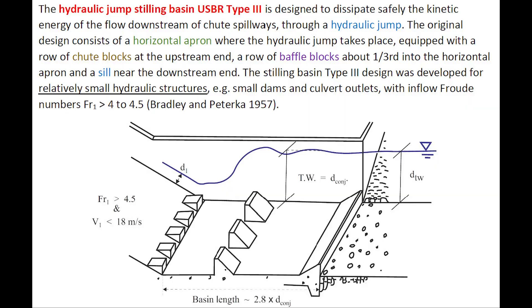The Hydraulic Jump Stilling Basin USBR Type III is designed to dissipate safely the kinetic energy of the flow downstream of chute spillways through a hydraulic jump.